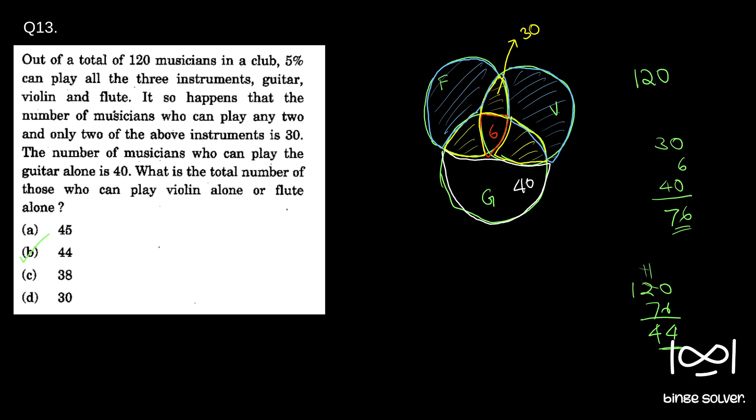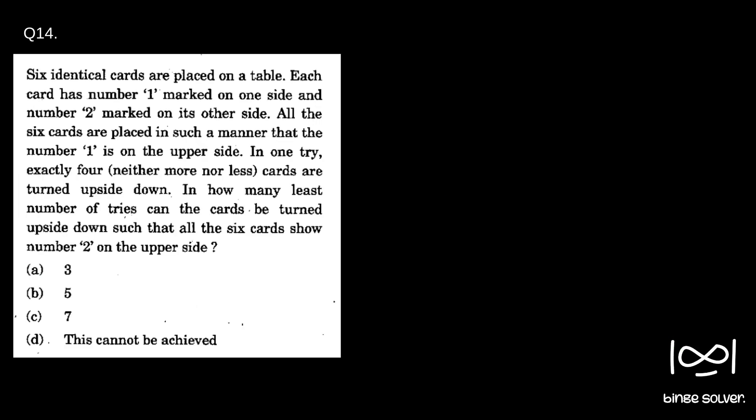Moving on to the next question, question 14. Six identical cards are placed on a table. Each card has a number one marked on one side and number two marked on its other side.